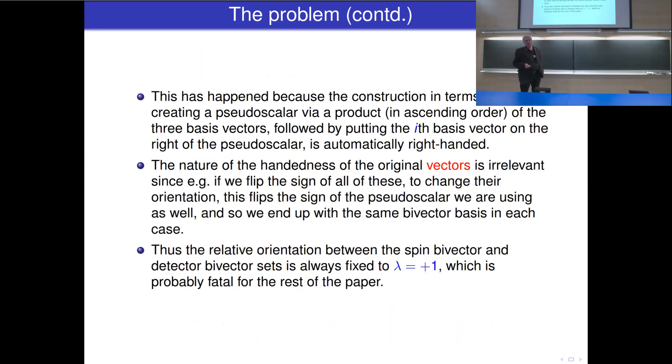We've already established that left-handed bivector bases should satisfy equations of the form 2 rather than 1. So this means that like the d i, the set l i here is automatically right-handed. And how this has happened is because the construction in terms of first creating a pseudoscalar via product in ascending order of the three basis vectors, followed by putting the i-th basis vector all the way to the pseudoscalar, is automatically right-handed, which is perhaps a slightly surprising feature of the process. The nature of the handedness of the original vectors is irrelevant. Imagine if you flipped the sign of all of these to change the orientation. That will flip the sign of the pseudoscalar, and so you end up with the same bivector bases in each case.